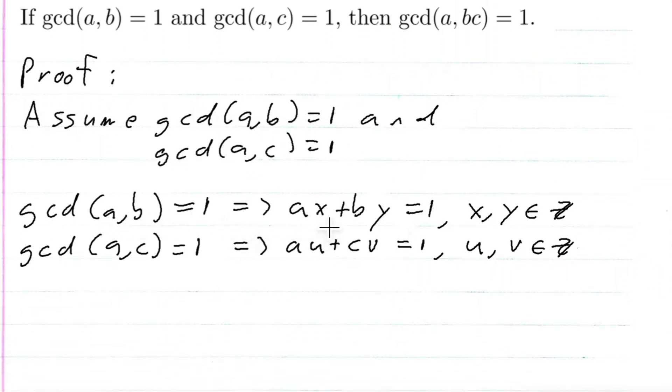So we know that AX plus BY is equal to one, and A, U plus C, V is equal to one. So what we can do is we can, we know that their product is equal to one, right? So this implies that AX plus BY times A, U plus C, V is equal to one, right?